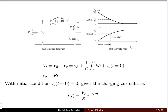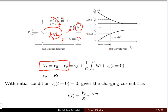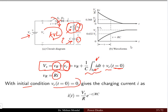Looking at the derivation, we write the KVL equation for the loop when the switch is closed and current I is flowing. The source voltage equals the resistor voltage drop plus the capacitor voltage: VS = VR + VC. VR is the drop across resistor R, which equals I times R. The capacitor voltage VC equals (1/C) times the integral of I dt, with initial time T0 to T. Taking the initial time t=0 when the switch was closed, and assuming the capacitor was initially uncharged, the charging current is i(t) = (VS/R) e^(−t/RC).